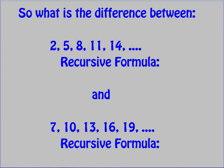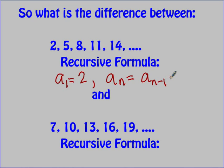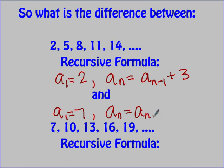Looking at two sequences, the recursive formula for the first identifies the initial term and then says a-sub-n equals a-sub-(n minus 1) plus 3. The second sequence also has a-sub-n equals a-sub-(n minus 1) plus 3, but the initial term is 7. The right-hand part of their recursive formulas is identical — it looks the same for any sequence with common difference 3. The only difference is where the sequence started.